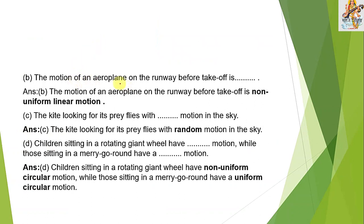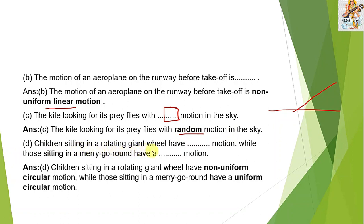The motion of an aeroplane on the runway before takeoff is non-uniform linear motion — it takes off from the ground with varying speed, so it is non-uniform. The kite looking for its prey flies with random motion in the sky. Children sitting in a rotating giant wheel have non-uniform circular motion, while those sitting in a merry-go-round have uniform circular motion.